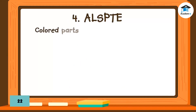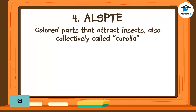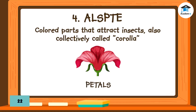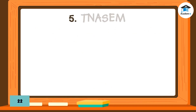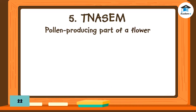Number 4: Colored parts that attract insects, also collectively called corolla. Answer: Petals. Number 5: Pollen-producing part of a flower. Answer: Stamen.